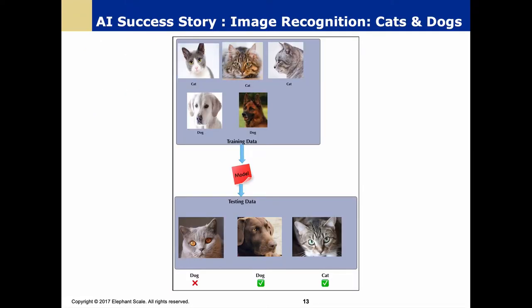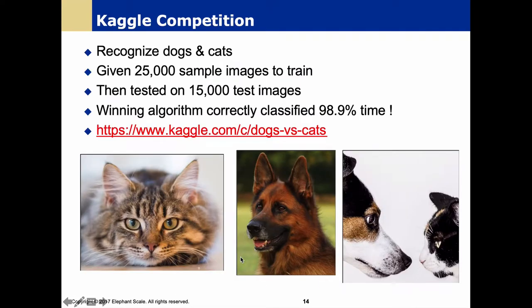You've probably seen examples of image recognition for cats and dogs. We have training data — pictures of cats, pictures of dogs — and we label them: this is a cat, this is a dog. We train a model, then on testing data we try to predict. Some predictions may be wrong, but we can evaluate how effective our model is. This comes from a Kaggle competition with 25,000 sample images to train on, with varying levels of difficulty. The winning algorithm got the correct answer almost 99% of the time.